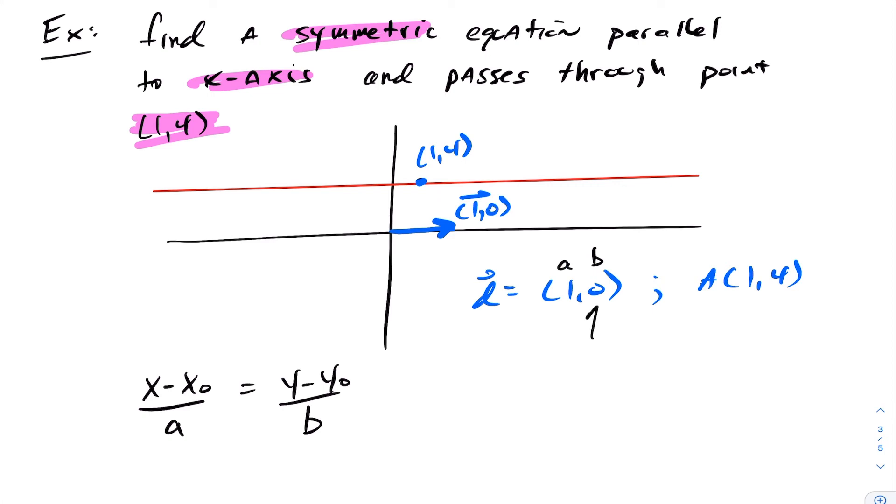Notice here we have an issue right away. My b value is zero, so because of that the symmetric form does not exist here. If I go to sub these values in, notice we get x minus 1 over 1 equals y minus 4 over 0, and therefore it is undefined and no symmetric equation exists.